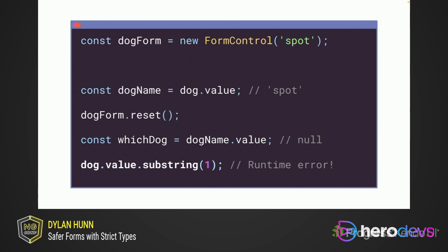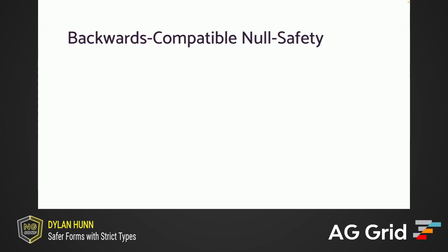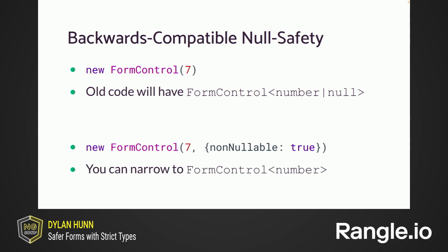But sometimes this is not the behavior that you want. As of Angular 14, form controls have a brand new option called non-nullable. Instead of resetting to null, the control will reset to its initial value. And as you might expect, this also removes null from the control's type. So in this example, we've gotten rid of the nulls entirely, and calling dot substring is now provably type safe. Old code will have a constructor that just has a value, so null will be inferred in the type. By adding the non-nullable option, you simply get FormControl of number.